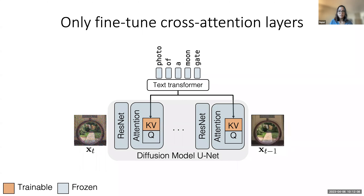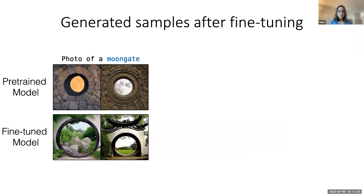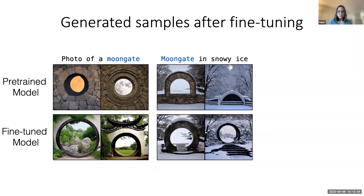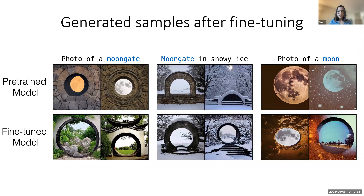So in our method, we freeze all the parameters of the diffusion model and the text transformer and only update these key and value projection matrices in the cross-attention blocks. Let's look at the results with this method. Compared to the pre-trained model, we can now generate Moongate images with this fine-tuned model and generate it in new unseen contexts. But let's look at some already existing concepts, for example 'photo of a moon.' We specifically picked this moon concept because in the text space it is very similar to Moongate. We see that during the fine-tuning process, the model has overfit to the Moongate concept, and even for this text prompt it's generating images very similar to Moongate, diverging from what the pre-trained model was generating.